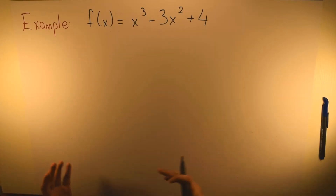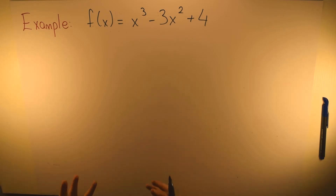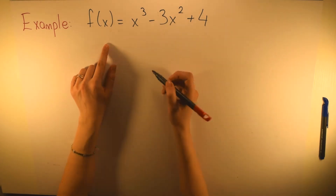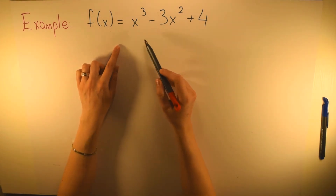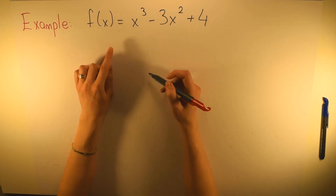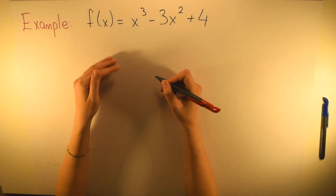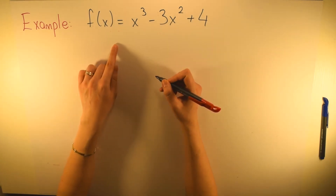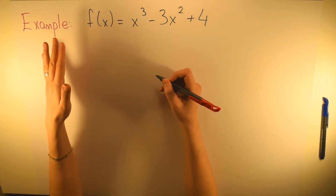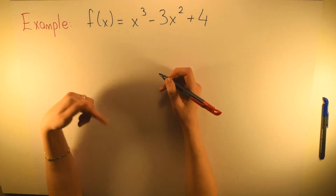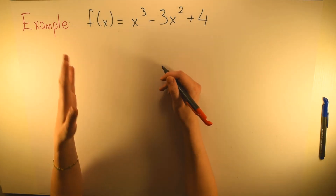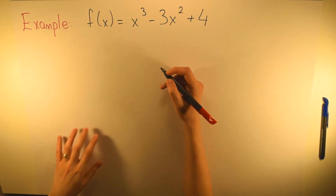It is easy to see these values when we have a graph, but how can we find them when we don't have any graph? Let's look at this example: f(x) = x³ - 3x² + 4. The values that make the derivative of the given function equal to zero are the local minimum and maximum values of this function. First, we take the first derivative, then make it equal to zero and find the critical points.